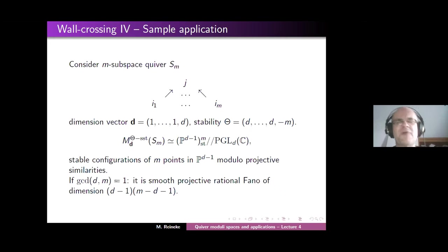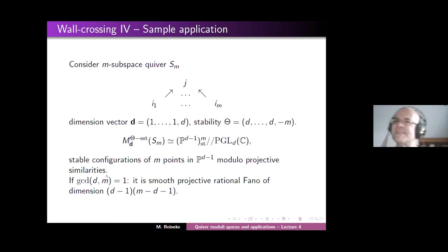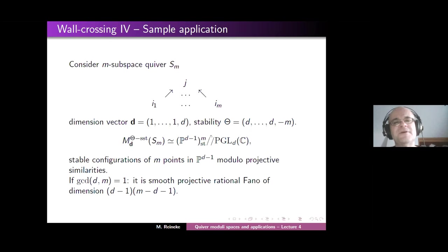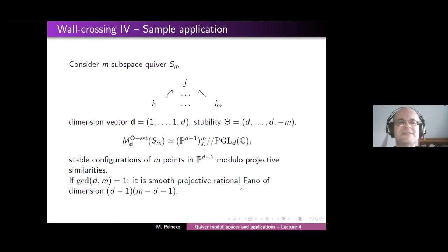So let me first summarize the geometric properties. We have the assumption that d and M have no common divisor except 1 — this is the indivisibility assumption on the dimension vector. Under this assumption, this configuration space is a smooth projective rational Fano variety of dimension (d-1)(M-d-1). So we get a series of very nice Fano varieties of any dimension whenever d and M are coprime.